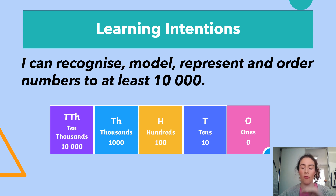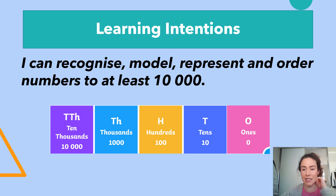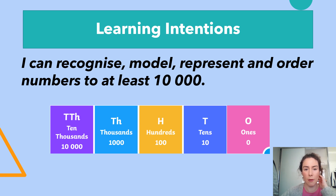Let's have a reminder of our place values. The ones is a singular number. If a number is in the second column, it is the tens. If it's three, it's hundreds. Four is thousands, and the fifth number is tens of thousands. Our learning intention is: I can recognise, model, represent and order numbers to at least ten thousand, and we're going to unpack this a bit more in the next slide.